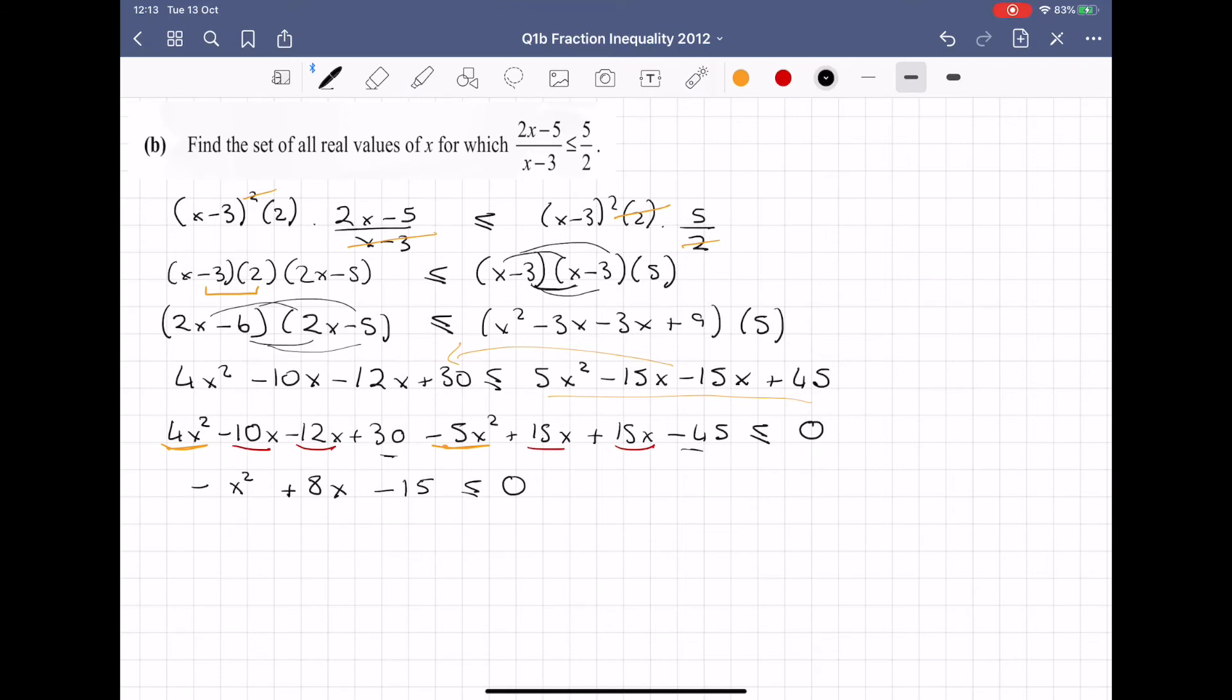I'm going to change the signs all the way across. And I just do this, it's not necessary, I just find it easier to work with a positive x² when I'm solving a quadratic. Now watch, I've changed the signs. I've changed the sign here of x², so it changes the direction of the inequality. Just what I was talking about at the start. If I change all of these signs like I've done, then it changes the direction of the inequality.